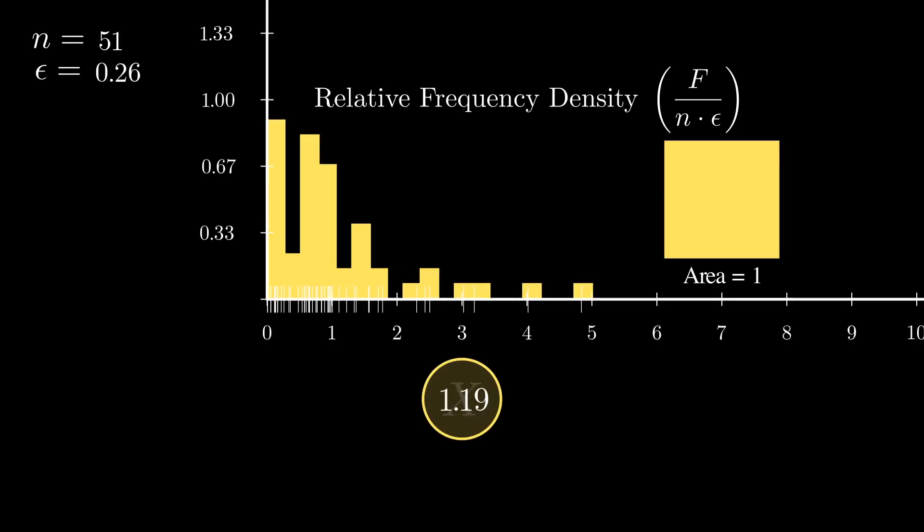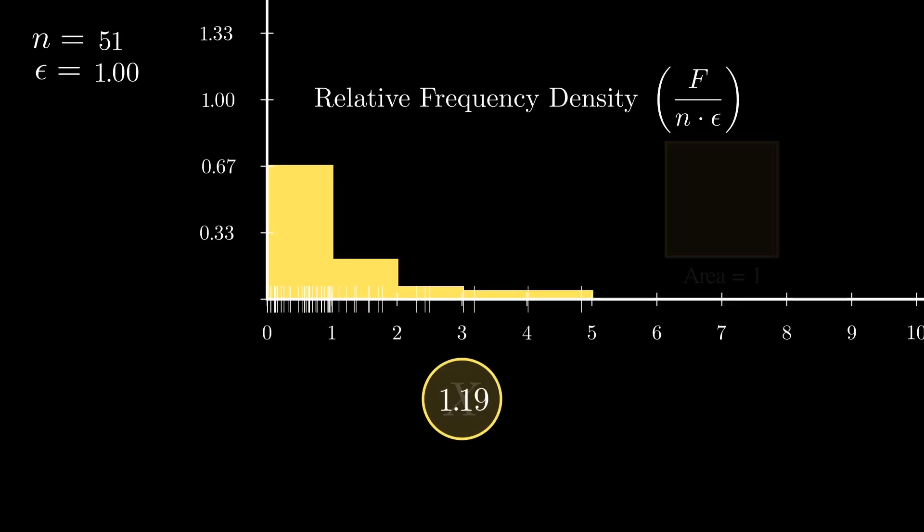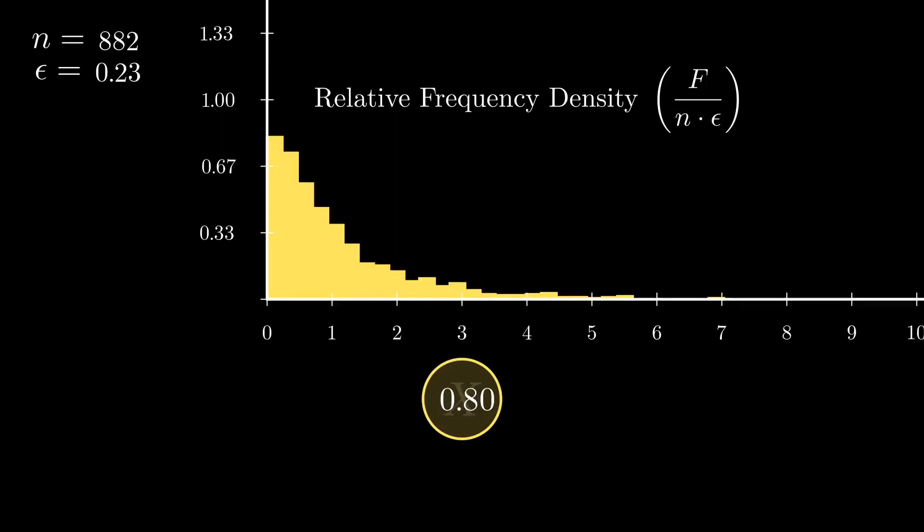This is called a histogram, and it is the preferred tool to describe the behavior of a random variable. The most complete and precise description of the behavior of the random variable is when we have a larger number of observations and very small bins. As we let epsilon approach 0 and n approach infinity, the histogram stabilizes and gets arbitrarily close to a curve.